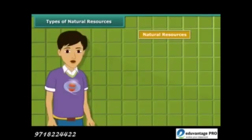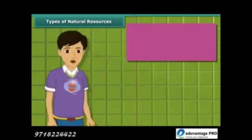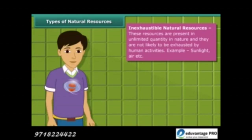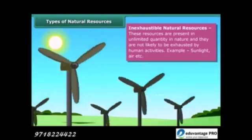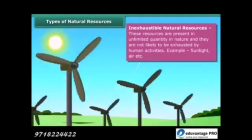Natural resources can be broadly classified into two categories: inexhaustible natural resources and exhaustible resources. Inexhaustible natural resources are present in abundance, hence it is unlikely that they will be exhausted by any human activity. Sunlight and air are examples of such resources.